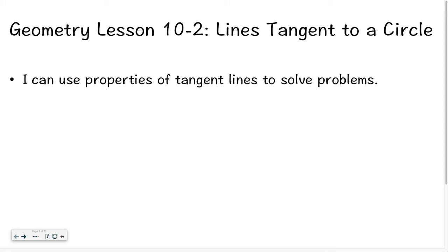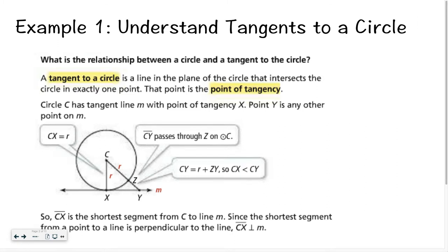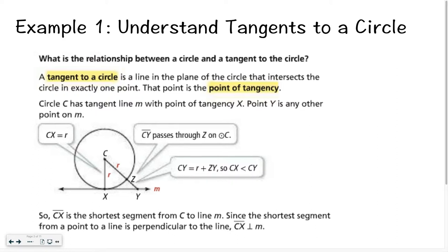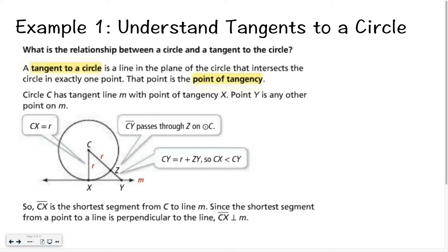Hello class, welcome to Geometry Lesson 10-2, which is all about lines tangent to a circle. By the end of this lesson, you should be able to use properties of tangent lines to solve problems. Let's jump in with example 1 and understand what a tangent is in relation to a circle. A tangent to a circle is a line that intersects the circle at exactly one point, and that one point is called the point of tangency.